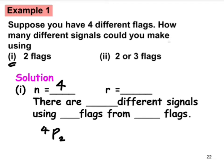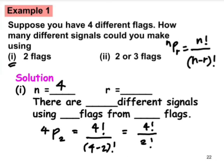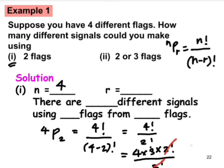Using the formula nPr = n! / (n − r)!, we get 4P2 = 4! / (4 − 2)! = 4! / 2!. We expand: 4! = 4 × 3 × 2!, divide by 2!, and cancel — leaving 4 × 3 = 12. So there are 12 different signals using two flags from four flags.